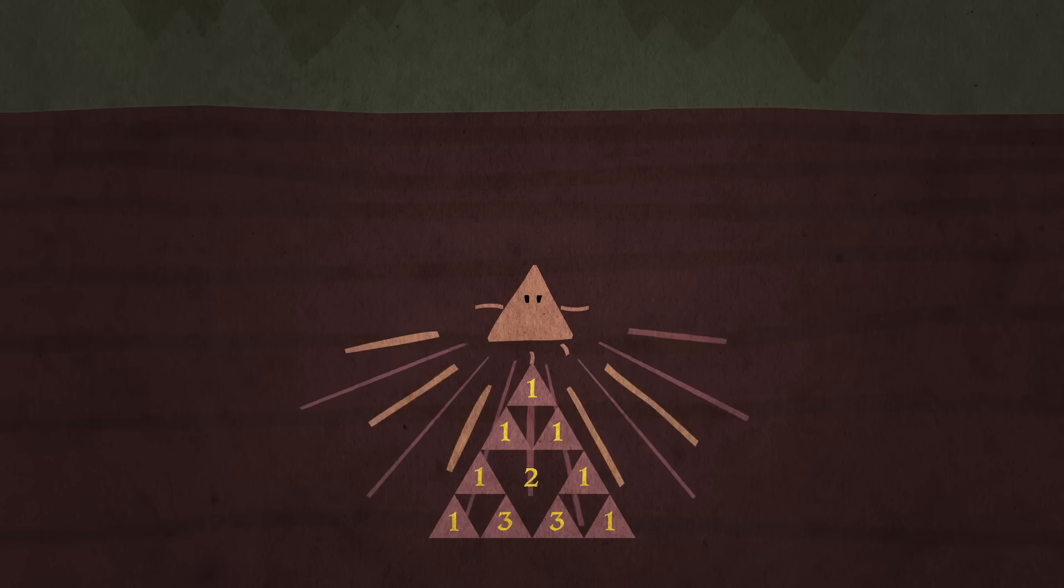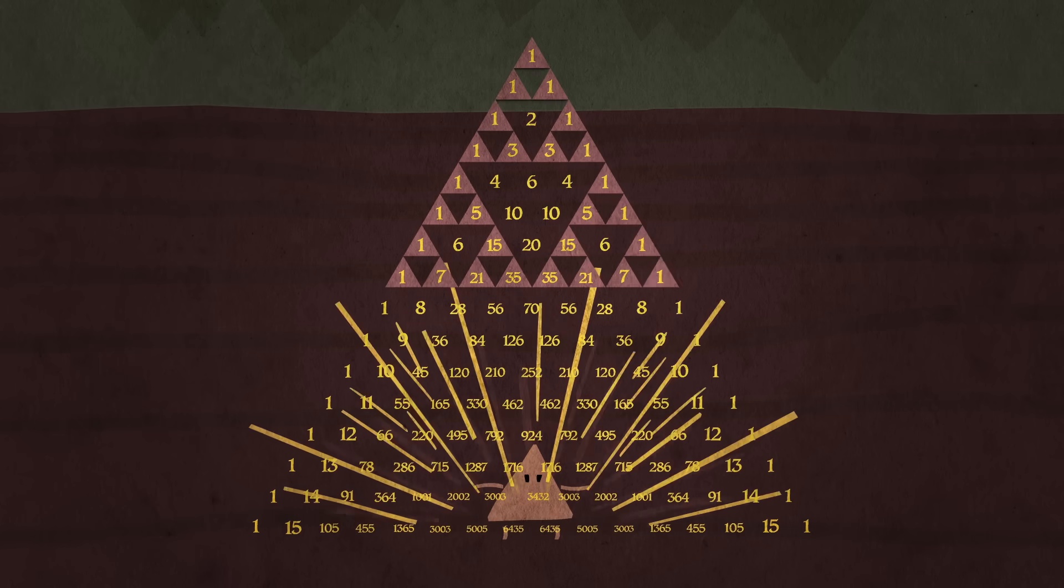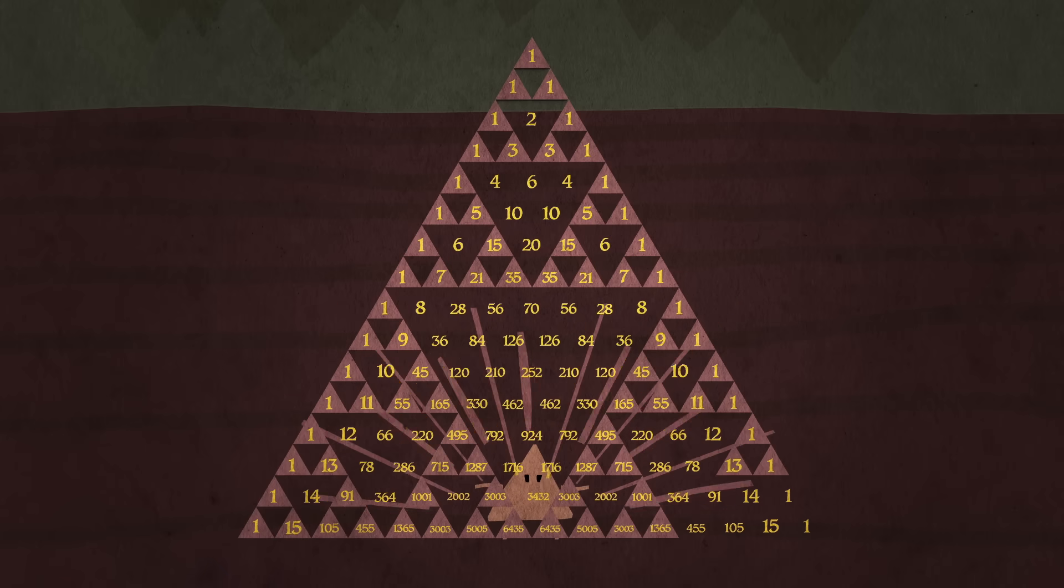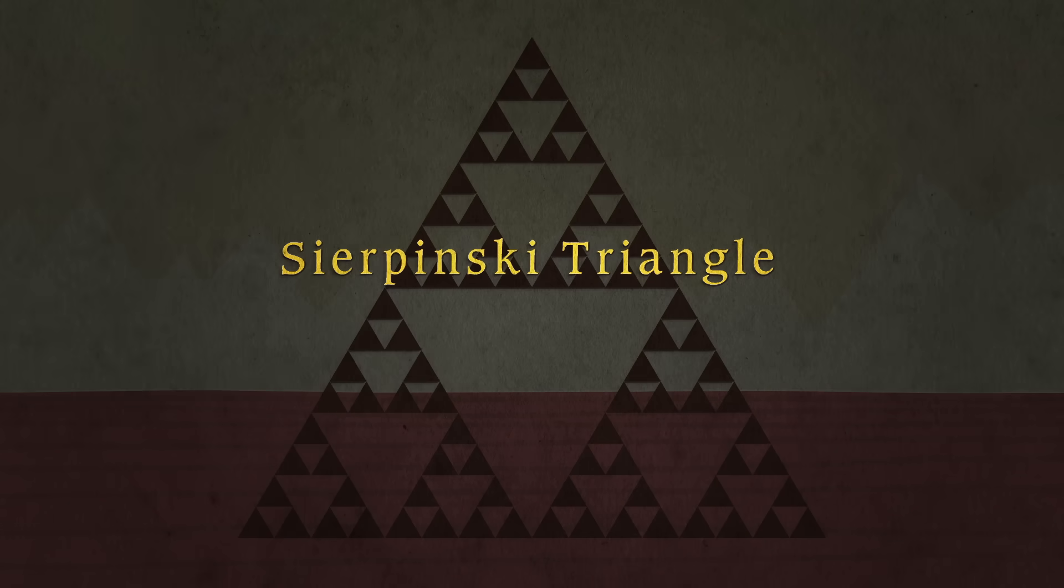Or how about this? Shade in all of the odd numbers. It doesn't look like much when the triangle's small, but if you add thousands of rows, you get a fractal known as Sierpinski's Triangle.